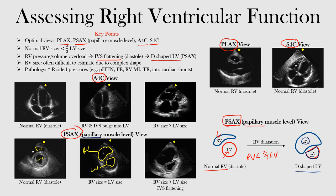Notice the size difference: the right ventricle is now bigger and they're almost actually the same size. In this third case, this is where we have severe right ventricular dysfunction. Notice the right ventricle — if I outline it — here's your right ventricle and here's your left ventricle. The right ventricular size is much greater than that of the left ventricle, and you have this intraventricular septum flattening.